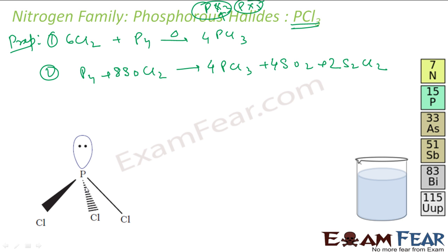Let's talk about the properties of PCl3. It is a colorless oily liquid. And this actually hydrolyzes in the presence of moisture.